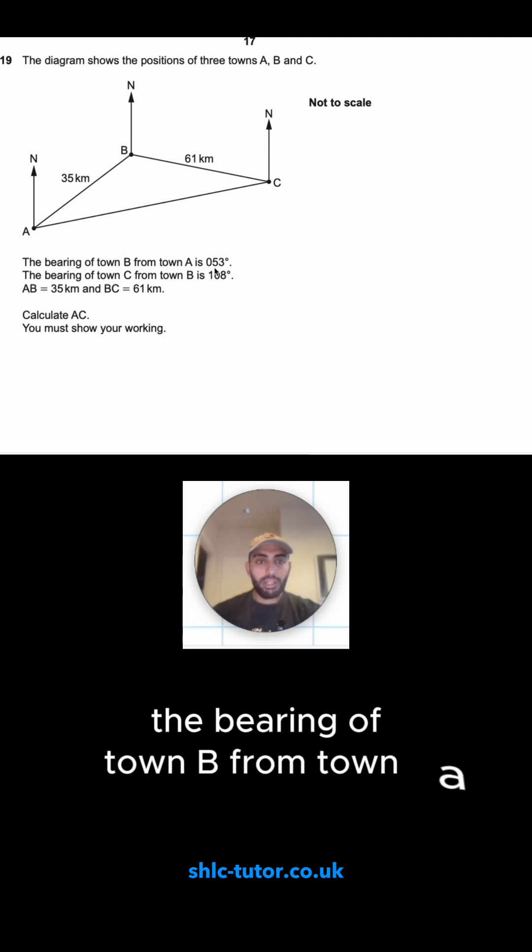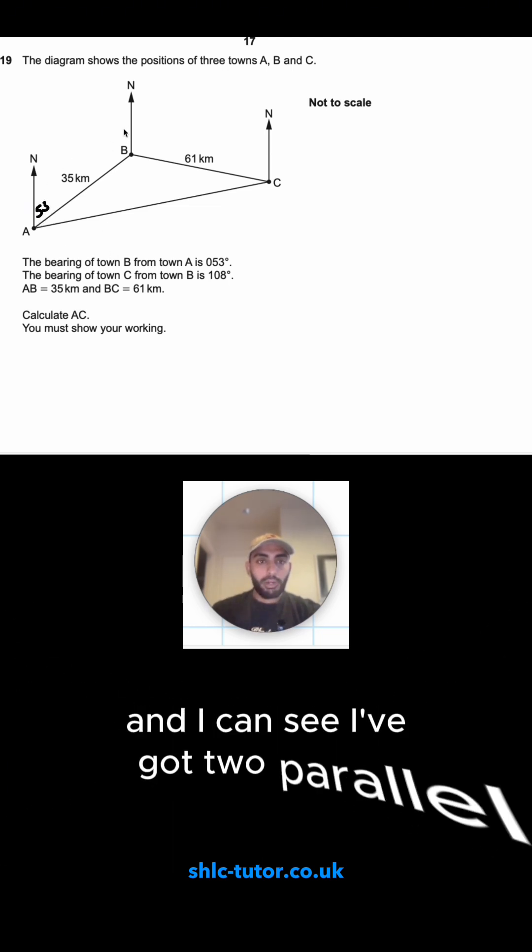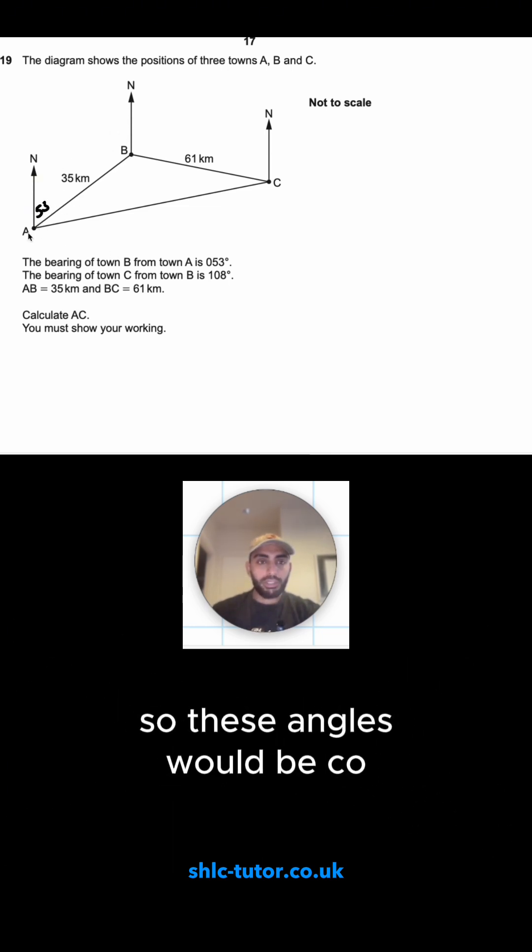The bearing of town B from town A is 53. So from A to B, I start at A and I'm going to B, that angle would be 53. And I can see I've got two parallel lines, so these angles would be co-interior to each other. So this angle would be 180 take away 53, so that's 127.